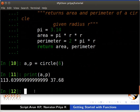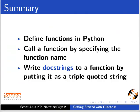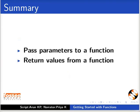This brings us to the end of this tutorial. Let us summarize. In this tutorial, we have learned to define functions in Python, call a function by specifying the function name, write doc strings to a function by putting it as a triple quoted string, pass parameters to a function, and return values from a function.